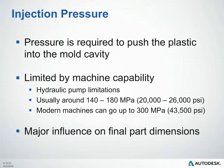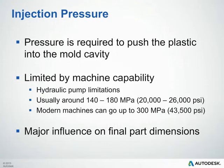Now I'll talk a little about injection pressure. Pressure is required to push the plastic into the mold cavity — this is what we call injection pressure. This is usually limited by the machine's capabilities. Typically we're looking around 140–180 megapascals, or 20,000 to 26,000 PSI. Some modern machines can go as high as 300 megapascals, or almost 44,000 PSI. This can have a big influence on your final part dimensions and will ultimately determine if you can produce the part in your machine.